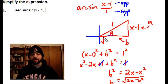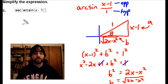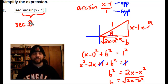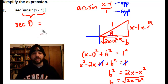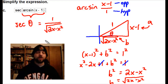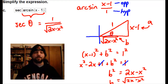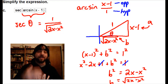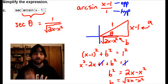Now we're trying to find the secant of theta, where theta represents the arcsin(x − 1) relationship. Secant is the reciprocal of cosine, so it's hypotenuse divided by the adjacent side, which is the square root of 2x minus x squared. That is the secant of arcsin(x − 1). If you like, you can rationalize and simplify further, but for the BC exam I'll leave it as is.